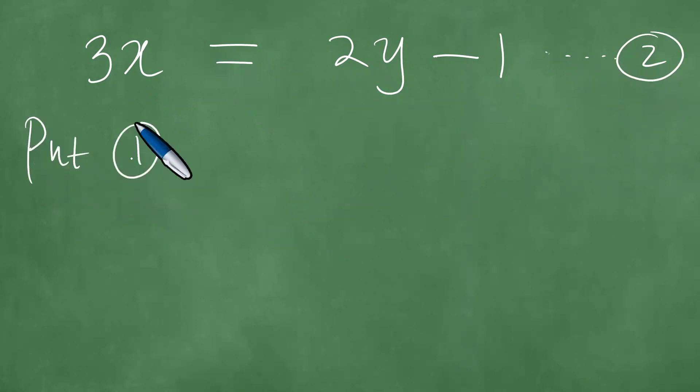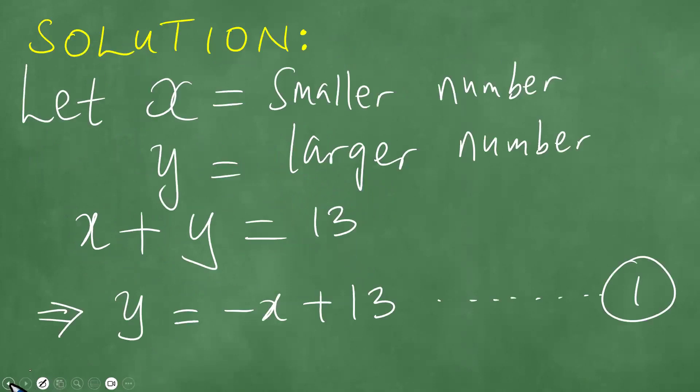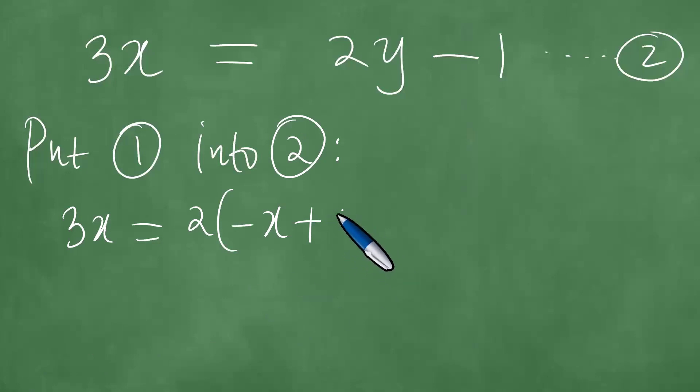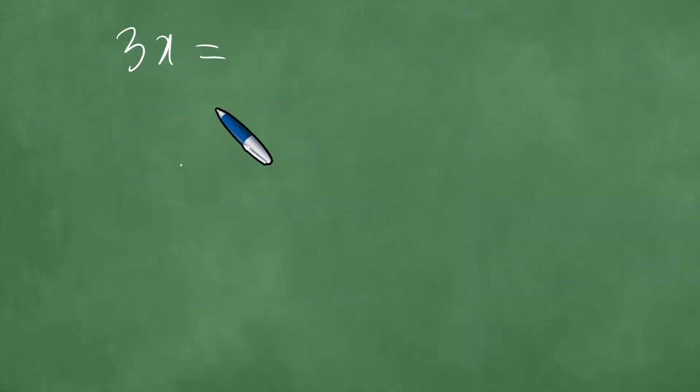Which means that 3x equals 2y and y is minus x plus 13. Like so. This is exactly 3x equals minus 2x plus 26 minus one. Which actually is 3x equals minus 2x.